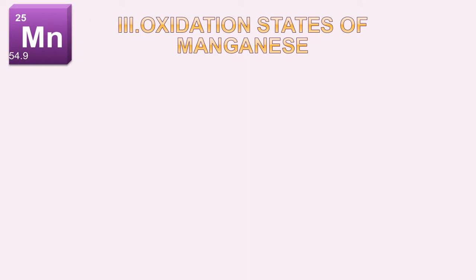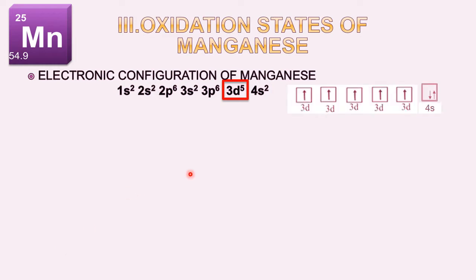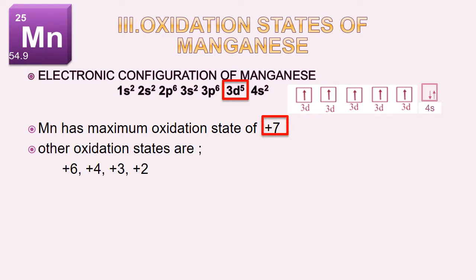Oxidation states of manganese: The electronic configuration of manganese shows that it has 5 unpaired electrons in the 3d orbital and 2 paired electrons in the 4s orbital. This makes a total of 7 electrons in the valence shell, showing that manganese has a maximum oxidation state of +7. Other oxidation states are +6, +4, +3, and +2. This is an important point to remember for MCQs.